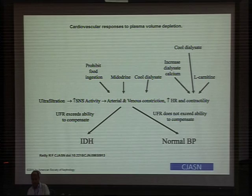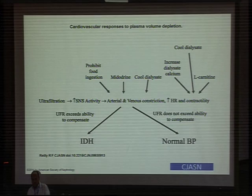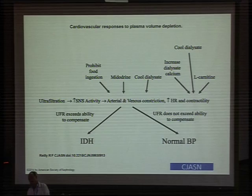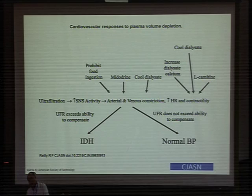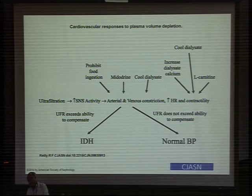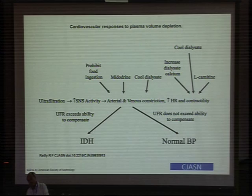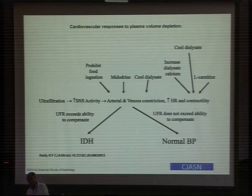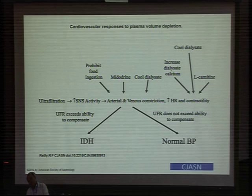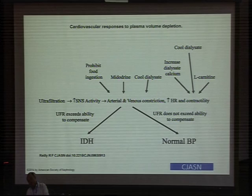In summary, intra-dialytic hypotension can be illustrated in a diagram showing that ultrafiltration triggers increased sympathetic nervous system activity and activation of the renin-angiotensin system, leading to vasoconstriction. If ultrafiltration exceeds the body's ability to compensate, intra-dialytic hypotension occurs. If it does not exceed that capacity, we can help prevent hypotensive attacks using midodrine, cold dialyzate, increased dialyzate calcium, and early intervention.